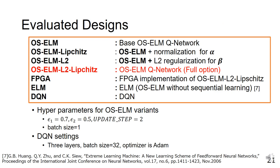The first design is OS-ELM base, which corresponds to baseline OS-ELM Q-Network and is the simplest method. The second design is OS-ELM-Lipschitz, which adds only spectral normalization of layer α. The third is OS-ELM-L2, which adds L2 regularization to layer β.